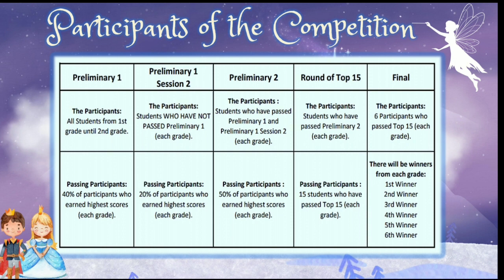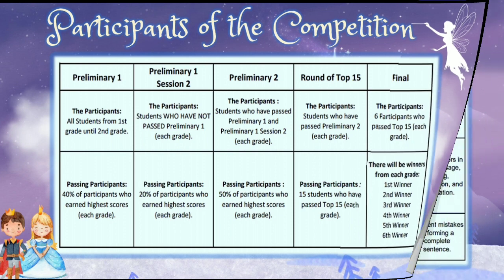For the round of the Top 15, passing participants are the 15 students who have the highest scores from each grade. For the Final of Mutiara English Fest, there will be winners from each grade: First winner, second winner, third winner, fourth winner, fifth winner, and sixth winner.